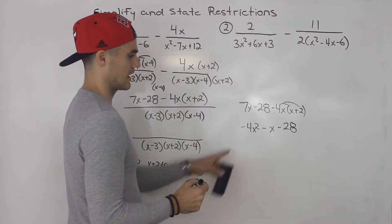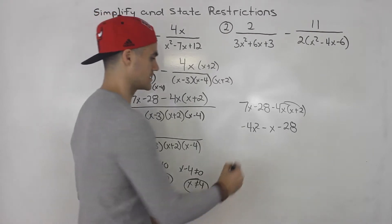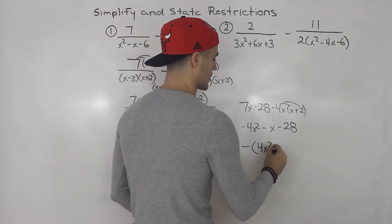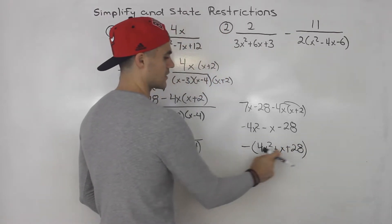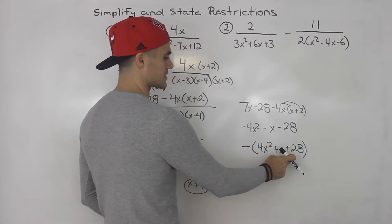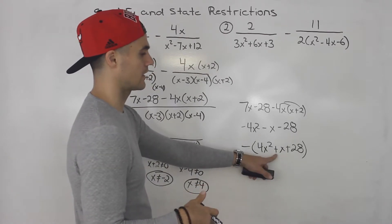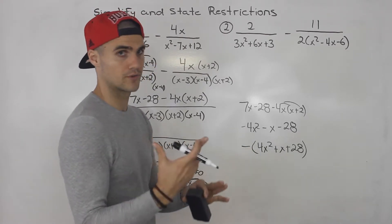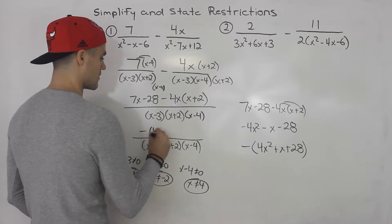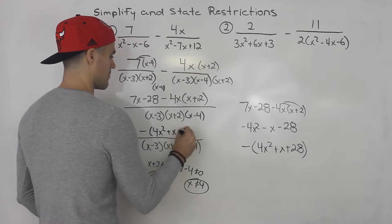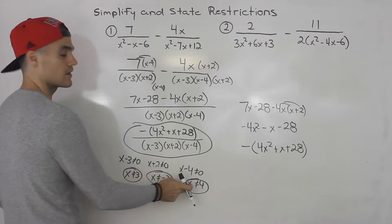Check if this can factor further — it actually doesn't. We could take out a negative, so this becomes negative bracket four x squared plus x plus 28. Four times 28 is 112, and there are no whole numbers that multiply to 112 and add to one, so this is the final answer. Those are the restrictions.